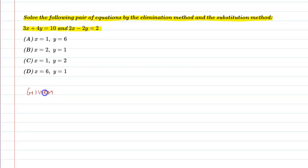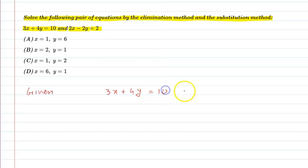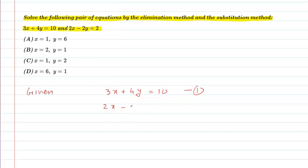What is given in this question? The pair of equations are: 3x plus 4y is equal to 10 — this is equation number 1 — and 2x minus 2y is equal to 2 — this is equation number 2.